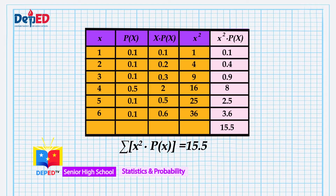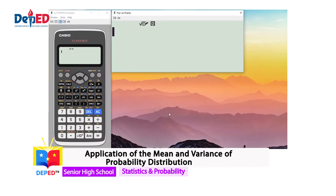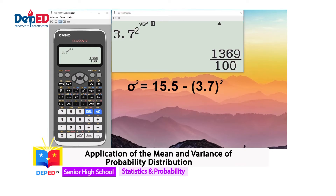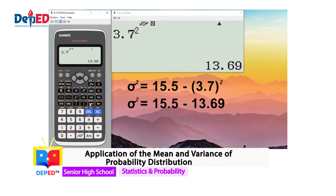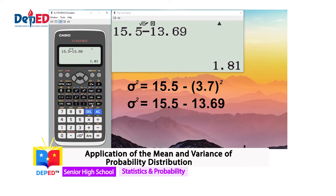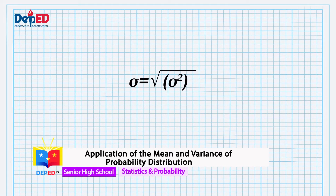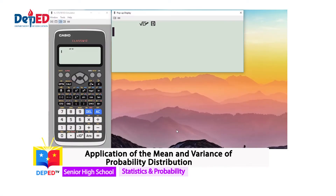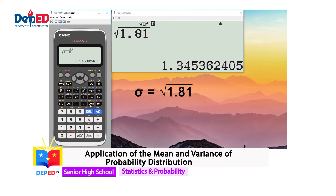Now, to complete our solution, let us recall the formula. Let us substitute the values. We know that the summation of the product is 15.5 and the mean is 3.7. We have to square the mean: 3.7 squared equals 13.69. To get the variance, we subtract it from 15.5, so 15.5 minus 13.69 equals 181/100, or 1.81. Since this is a square unit, we need to get the standard deviation by solving the square root of the variance. The square root of 1.81 is about 1.35.